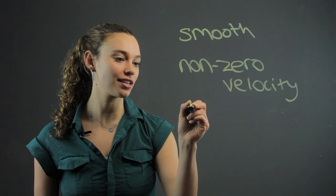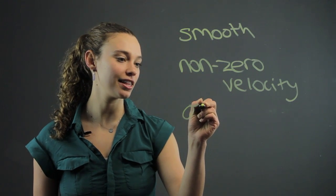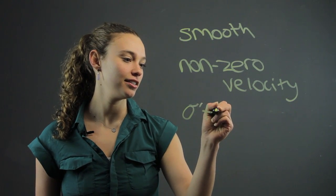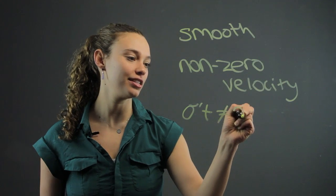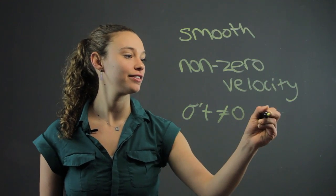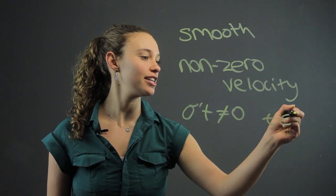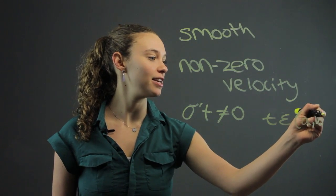We write that as, like this - σ'(t) cannot equal zero anywhere on the curve. And we usually indicate this with the interval notation a to b.